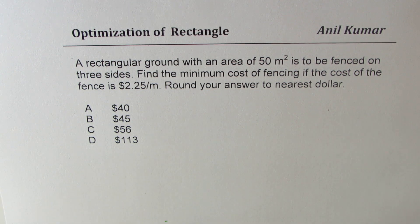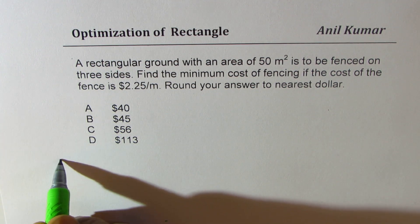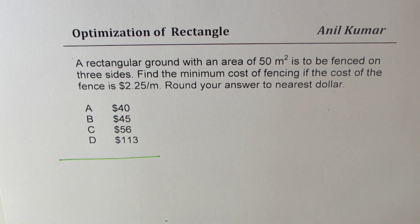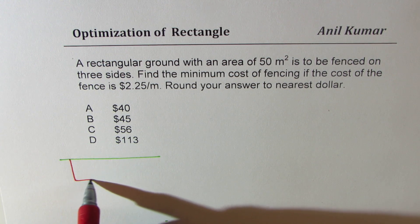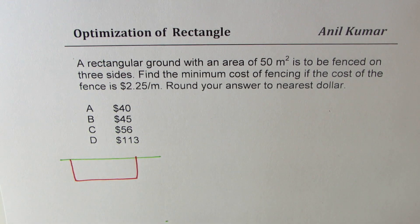Round your answer to nearest dollar. So we need to fence from three sides. We already have a support on one side. Let's say that's the kind of fencing which we have to do.